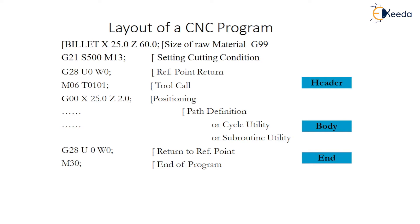Then the next part will be the body. Body means where we have to define the actual cutting operation. In the part here, that is G01, G02, G03 — these are the cutting operations. G71, G72, G73 — these are the cutting operation cycle utilities. We have to use those cycle utility subroutine parts in the body. That comes under CNC programming part body, or it is the main part programming.